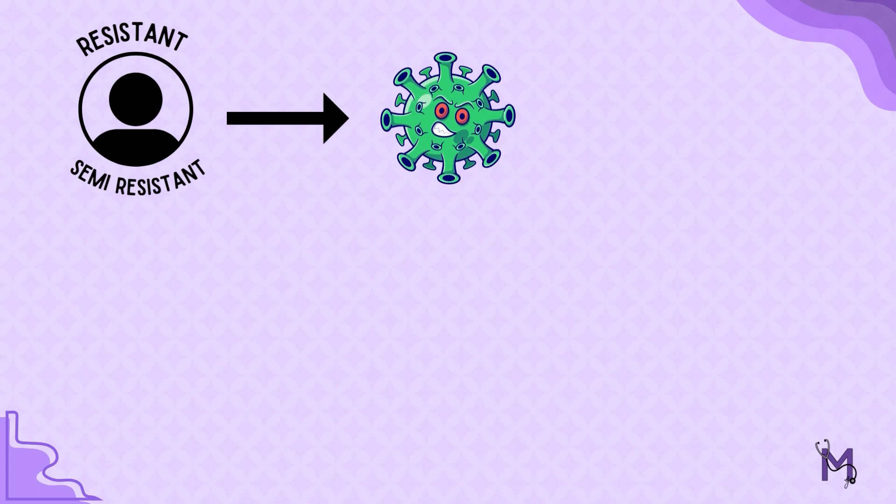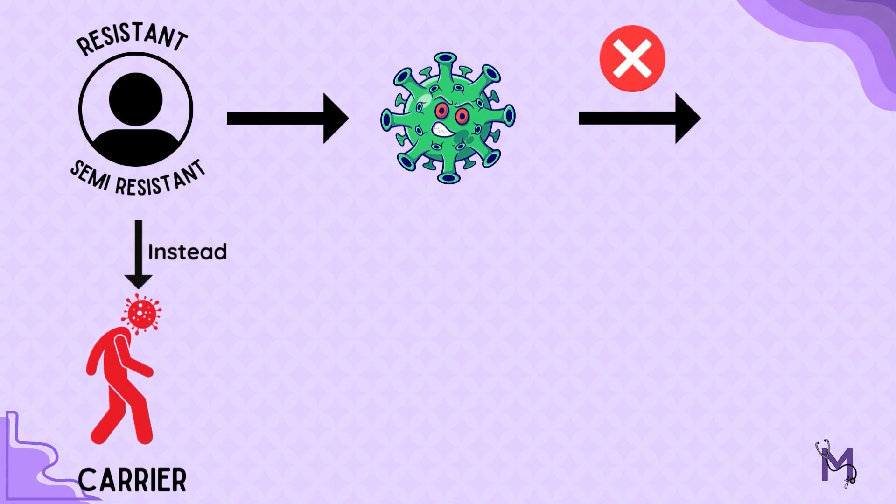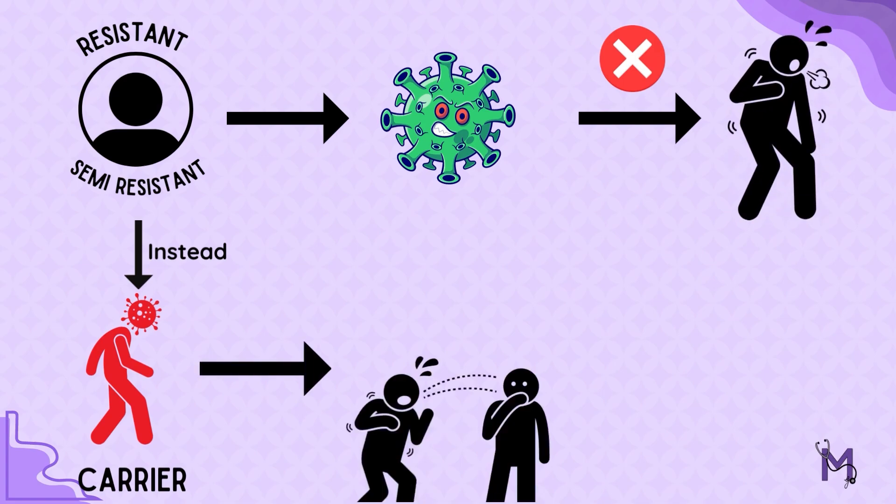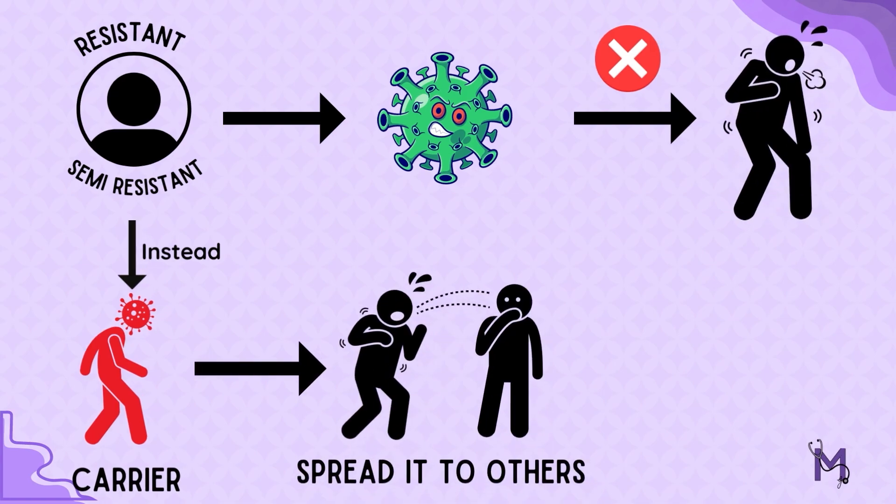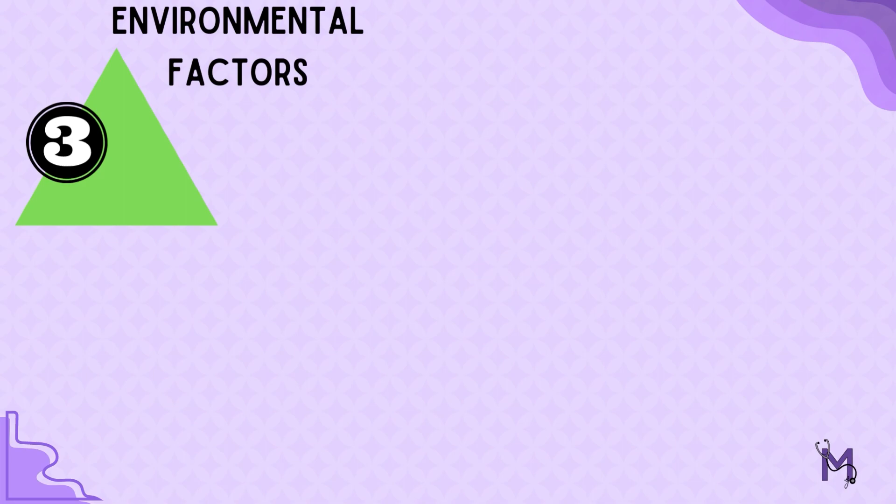Now let's consider a host who is resistant or semi-resistant to an agent. In this case, instead of getting affected, the host becomes a carrier who himself will not get affected but will cause the disease in others.